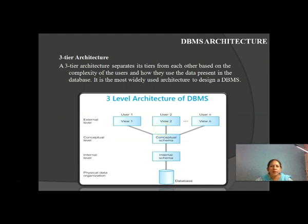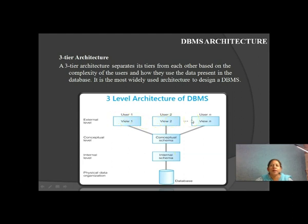On screen we can see the database architecture — a three-tier architecture that separates its tiers from each other based on the complexity of users and how we use the data present in the database. The lowest level is physical data organization. Then the internal level is the first level that interacts with the database. Then the middle level is the conceptual schema or logical view, which interacts with the internal schema. The topmost level is the external level, called the user view, with which end users interact. Each level has its own role.